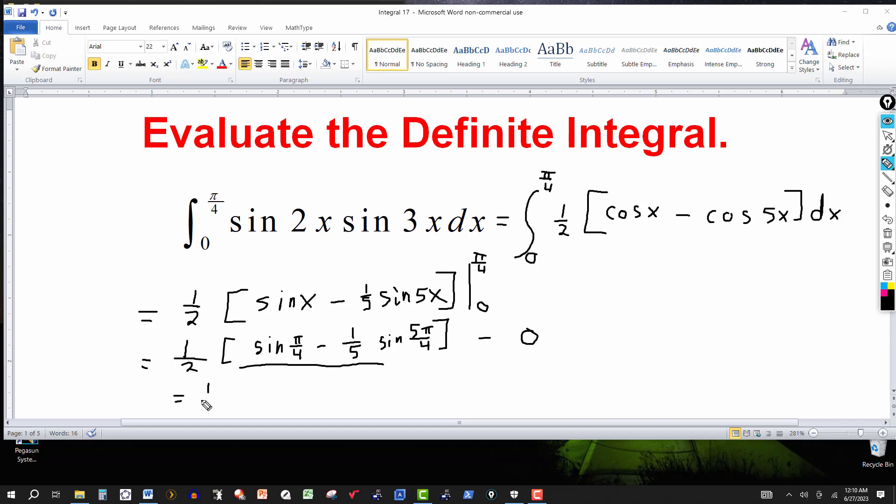So all we have is this right here. Let's just get it equal to one-half. And then sine of pi over 4. Again, you can think of that in degrees if you want, 45 degrees. That's the square root of 2 over 2. Then it's minus one-fifth.